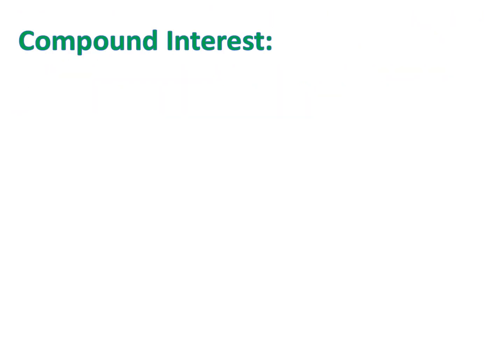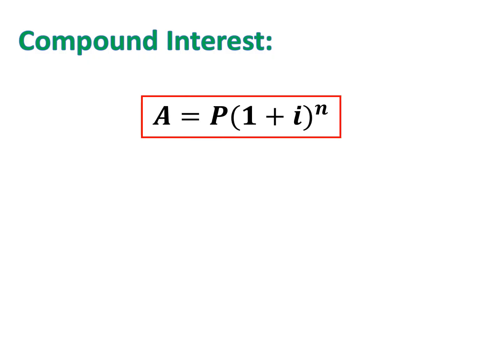The next formula is the compound interest formula. If money is in a bank earning compound interest, you earn interest and it's added back into your account. The next time interest is calculated, it's on a bigger amount — so you start earning interest on your interest, and your investment grows much quicker. The formula is A equals P times (1 plus I) to the power of N. Your money starts growing exponentially.